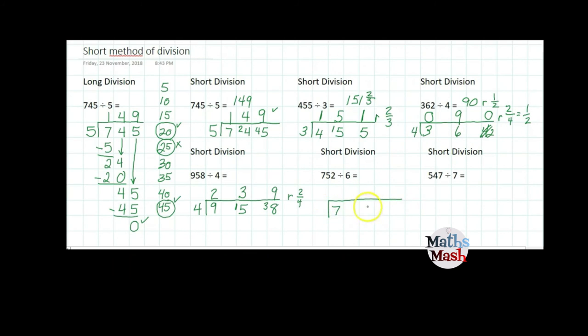Next one. 752 divided by 6. How many sets of 6 in 7? That's 1 with 1 left over, gives me 15. And how many sets of 6 in 15? That's 2 with 3 left over.